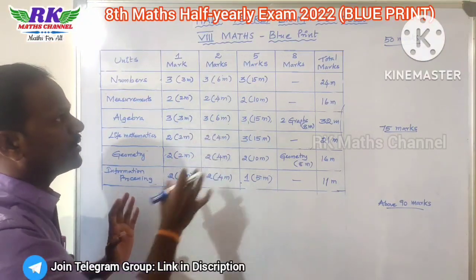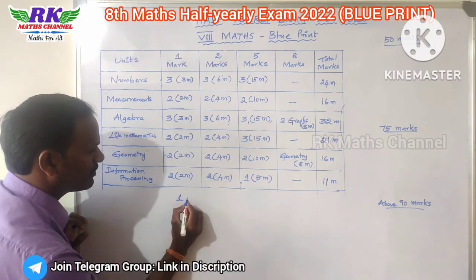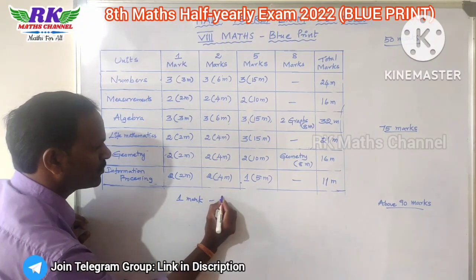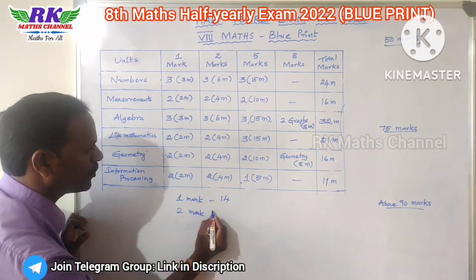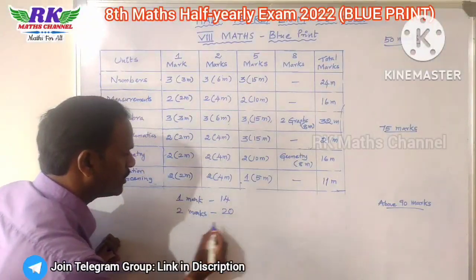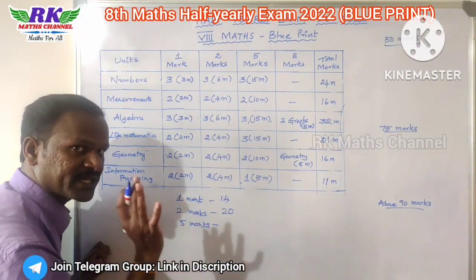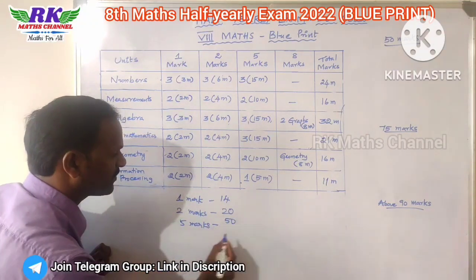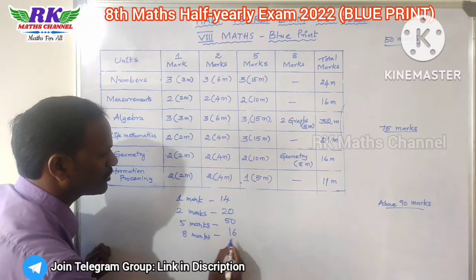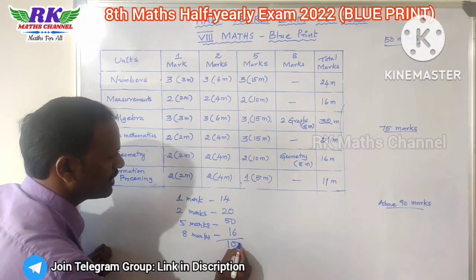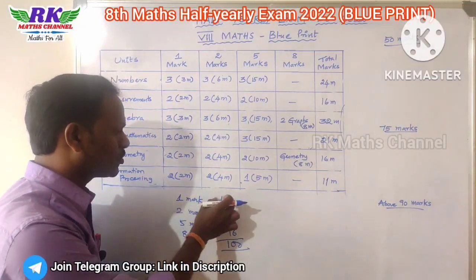Now if you look at the blueprint: one mark — 14 bits, 14 marks. Two marks — 10 questions, 20 marks. Five marks — 14 questions, giving about 15 to 16 marks. Total is 100 marks. In the quarter section, there are 10 marks.